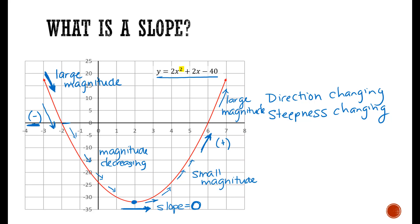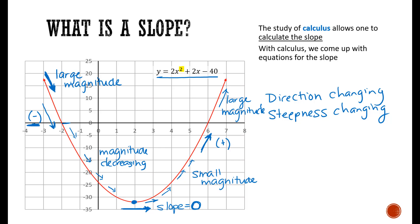Unlike the linear function where we had a constant slope everywhere, with this quadratic the slope is changing everywhere — not only the direction, but the magnitude as well. And we want to be able to calculate this slope. As we go forward, there are some business applications for this, and that's where calculus is going to step in. The study of calculus allows one to calculate the slope and come up with an equation for it — so that we can determine the slope at x = −2, x = −1, or at positive 5. The slope value would be different for all of these points, and we want to come up with an equation for it. That's where we're going with calculus.